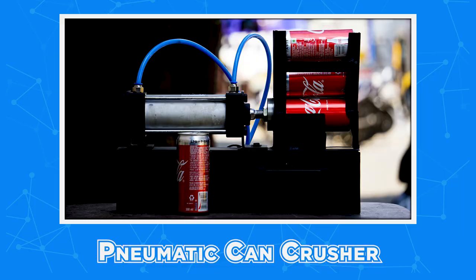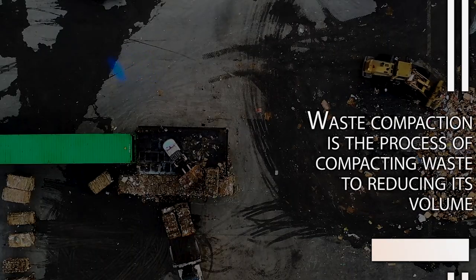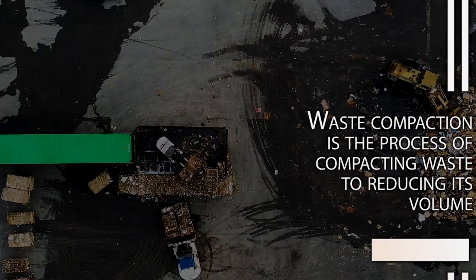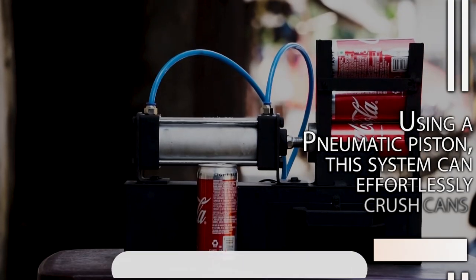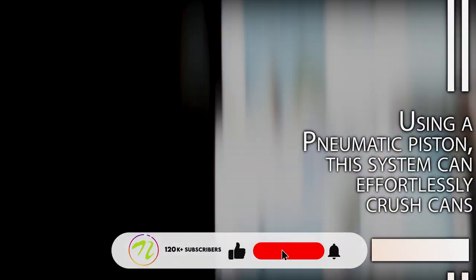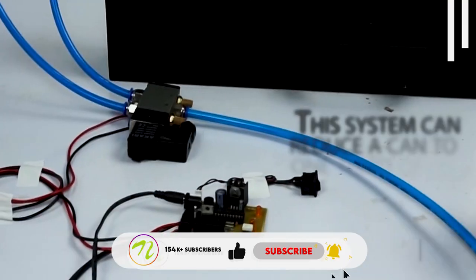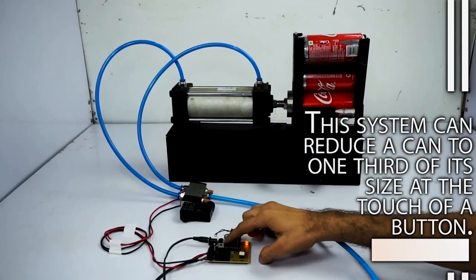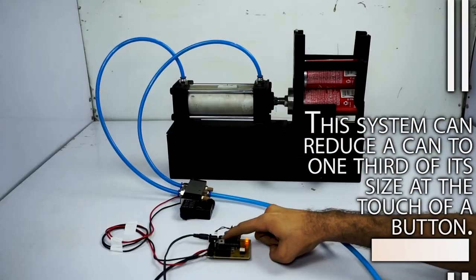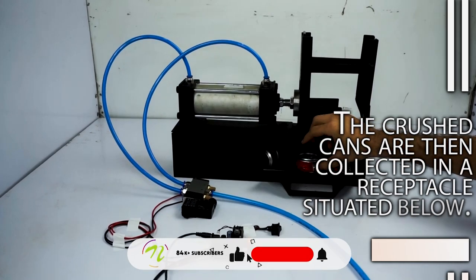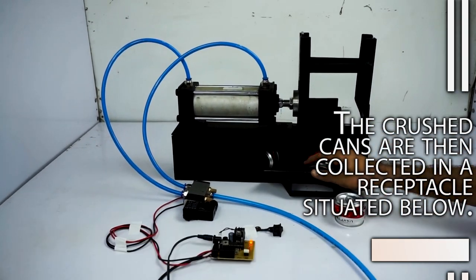Pneumatic can crusher. Waste compaction is a process of compacting waste to reduce its volume. Using a pneumatic piston, this system can effortlessly crush cans. This system can reduce a can to one third of its size at the touch of a button. The crushed cans are then collected in a receptacle situated below.